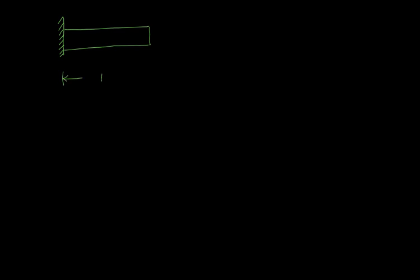Let me first define all the geometric properties. This bar has got a length of magnitude capital L — take care of the units, it can be in meter or in mm. It has got a cross-sectional area of magnitude A, with units in mm squared. These are the geometric properties that we are concerned about.